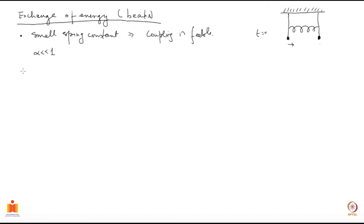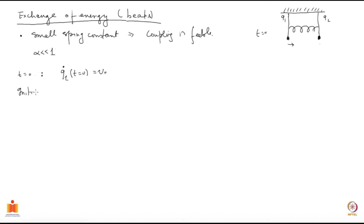Let both of them be hanging down, and then at some point which we call t equal to 0, we give the first one — let us say this is q1 and this is q2 — we give q1 a gentle velocity. So at t equal to 0, q1 dot equals v0. That is what we do; these are our initial conditions at time t equal to 0.